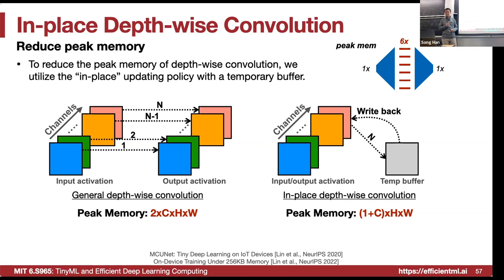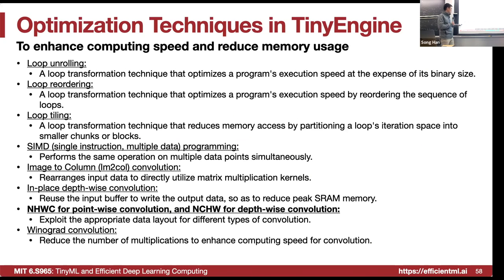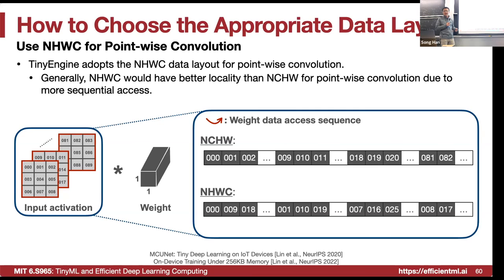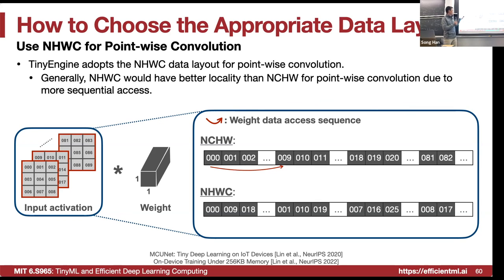Another concern is that Winograd requires the weights to be constant, so we can pre-compute the transformation — it does not apply to on-device training. However, for sparse update training (learned last week), if certain layers are chosen not to update, their weights remain constant and Winograd can still be applied to those layers' forward passes.